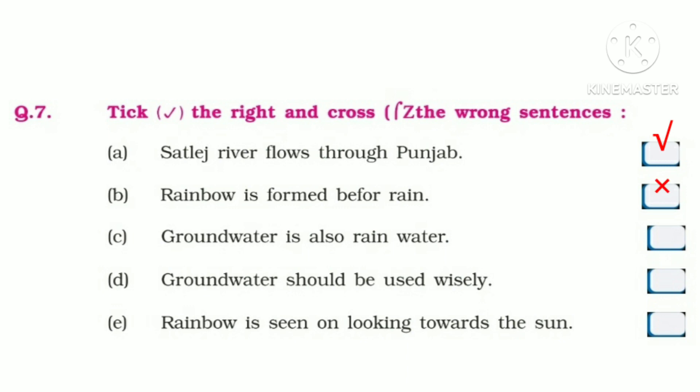Tick the right and cross the wrong sentences. A. Satlaj river flows through Punjab — Correct. B. Rainbow is formed before rain — Wrong. C. Ground water is also rain water — Correct. D. Ground water should be used wisely — Correct. E. Rainbow is seen on looking towards the sun — Wrong.